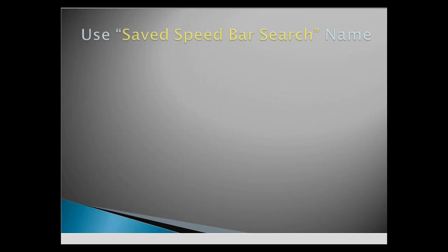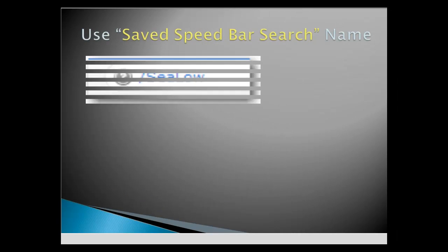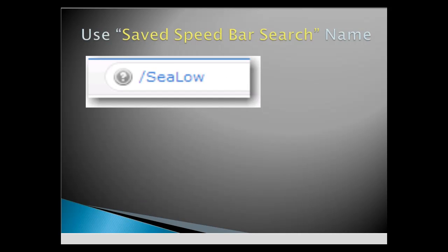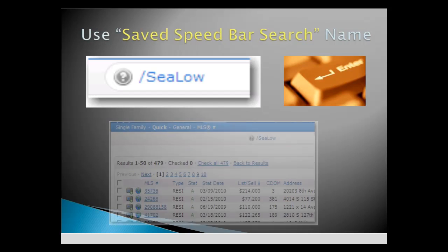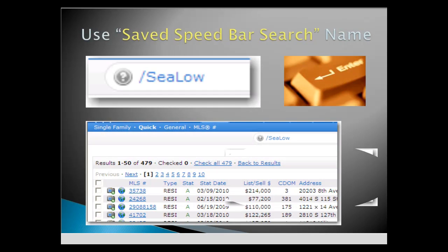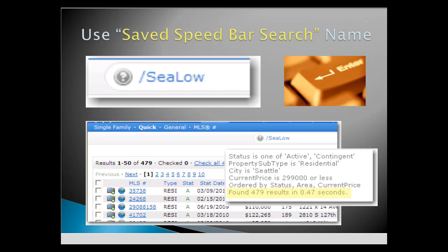In the Speed Bar window, type in a previously saved Speed Bar shortcut. Click Enter to quickly recall all the low-price listings in Seattle — all 479 of them — in 0.47 seconds.